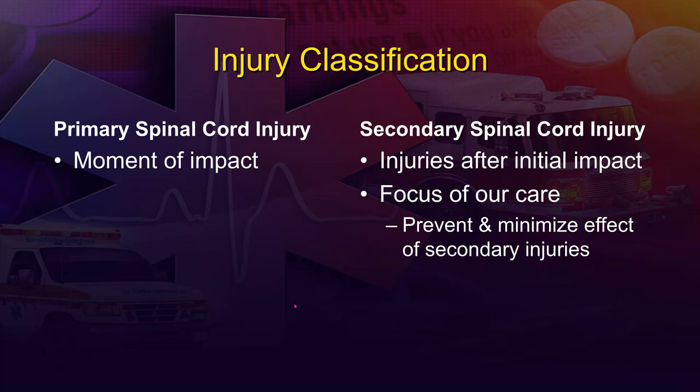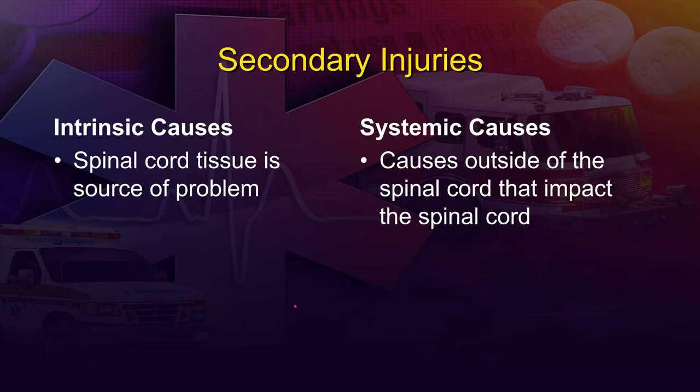Spinal cord injuries are classified as primary or secondary. A primary spinal cord injury occurs at the moment of impact — kinetic energy is translated directly to the spinal cord causing immediate damage. Secondary injuries occur after the initial impact, potentially due to the patient's condition or inadequate treatment, and they worsen the primary injury. Secondary injuries can be divided into intrinsic causes — problems inside the spinal cord like swelling or blocked blood flow — and systemic causes outside the cord, like hypovolemia and hypoxia.